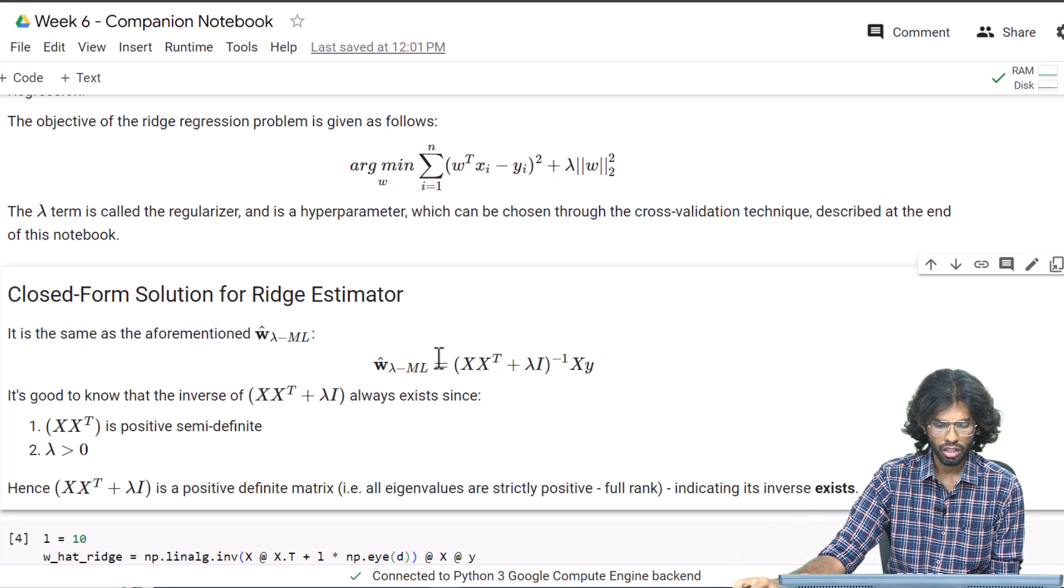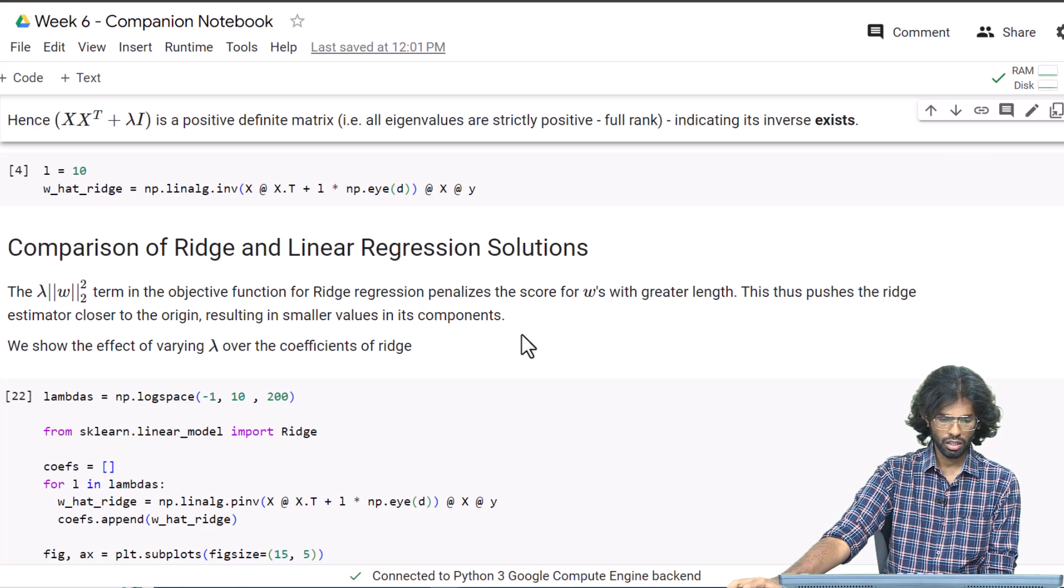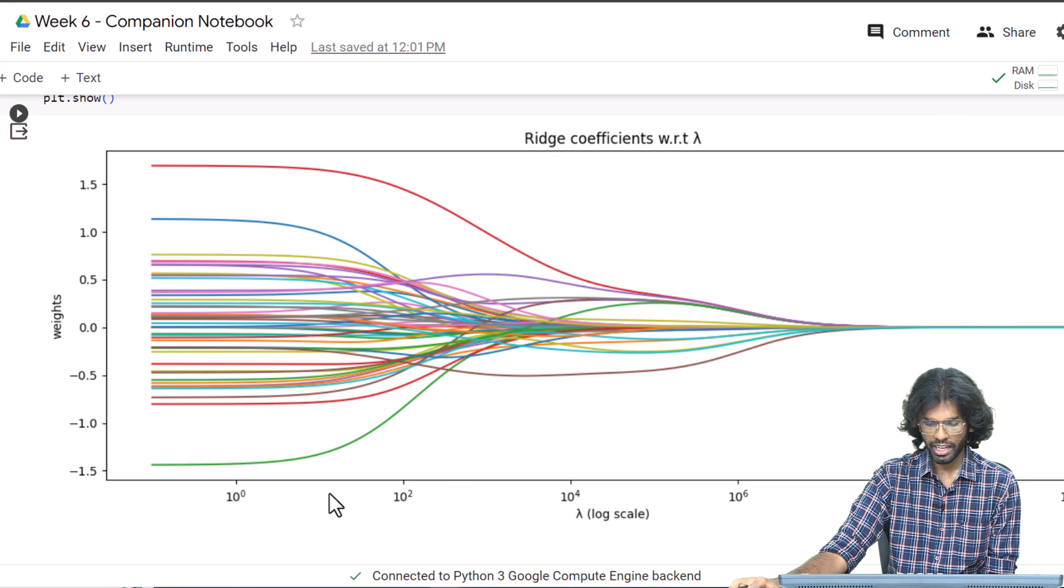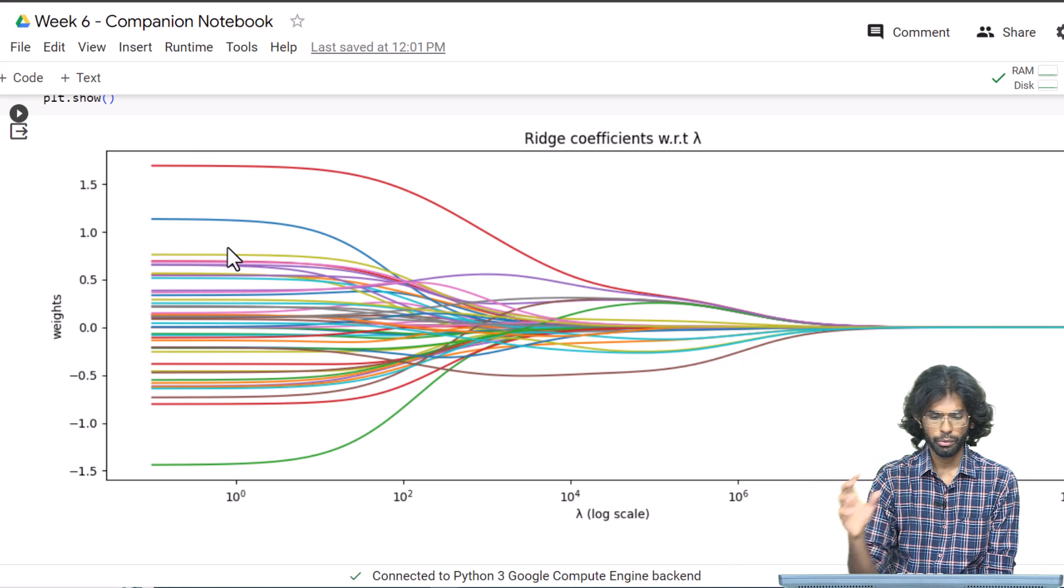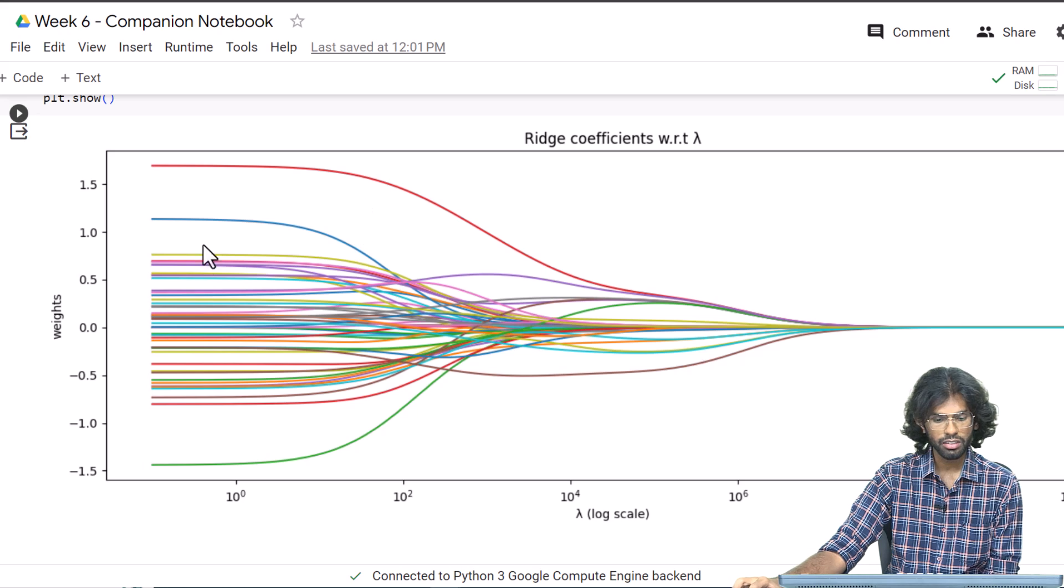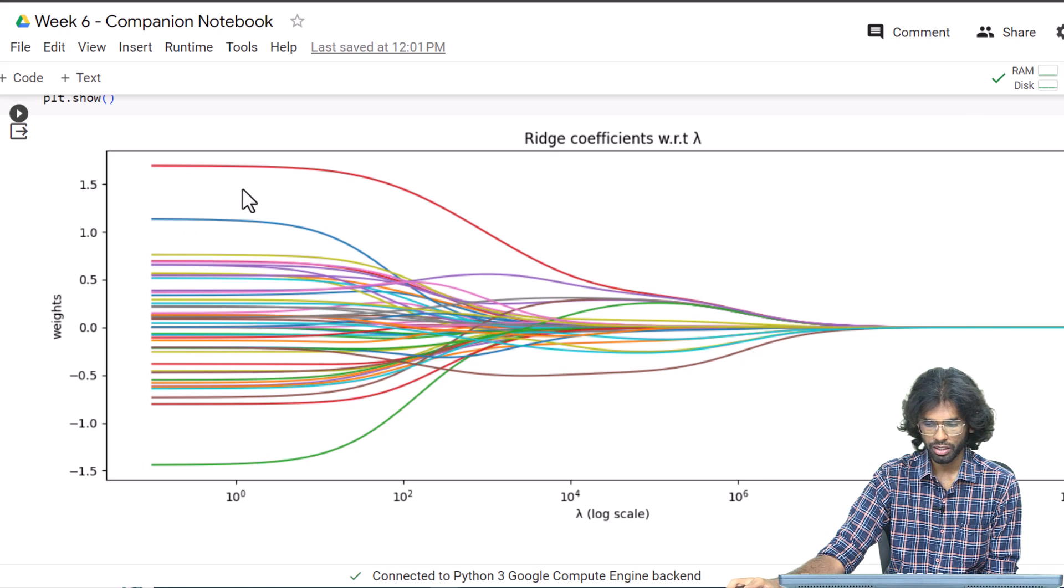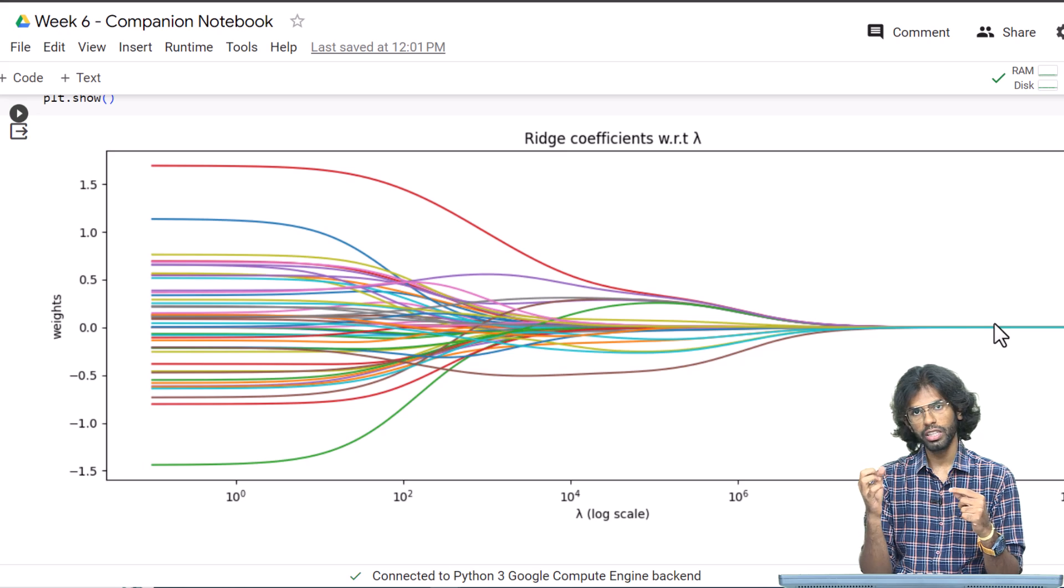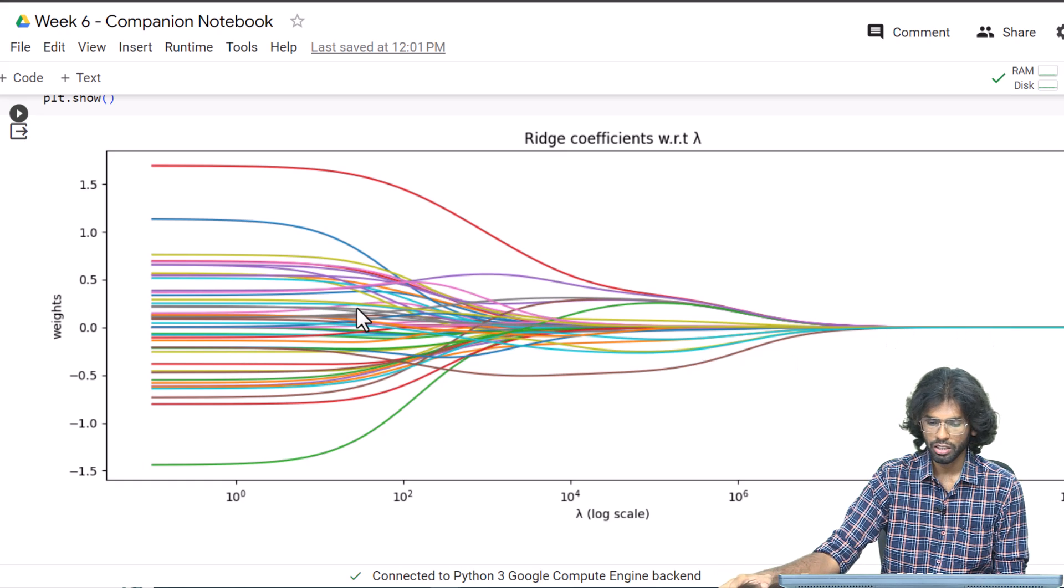Now we will compare how w-hat λ ML and w-hat ML look. The x-axis corresponds to the regularization strength, or λ, and these lines correspond to each weight. Here we have 50 weights, 50 lines, because we have 50 different features for our data point. As you can see, as I increase the regularization strength, they all tend to decrease and converge to zero. As we increase the regularization strength, we are pulling the w vector closer to the origin. That can be illustrated in this diagram.